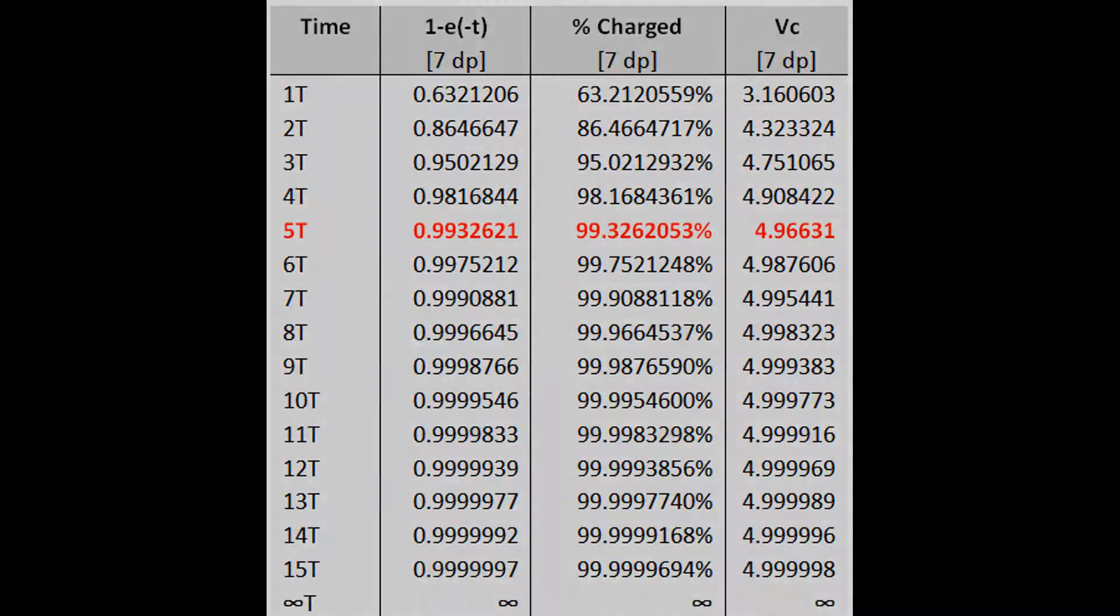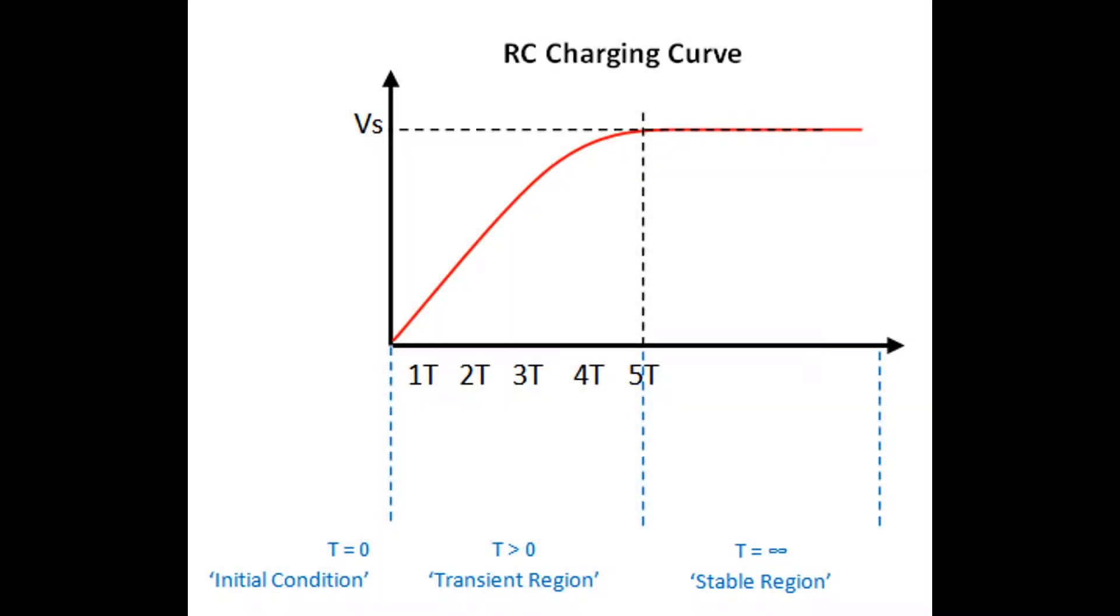If I now plot that on our graph we can clearly see that beyond 5T our graph is showing infinity. Infinity would be considered a time when all transients have completed.